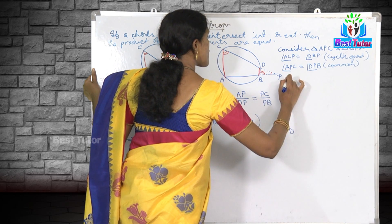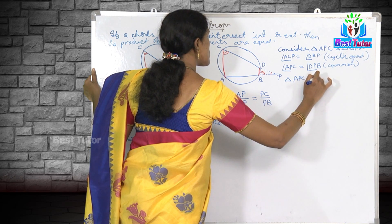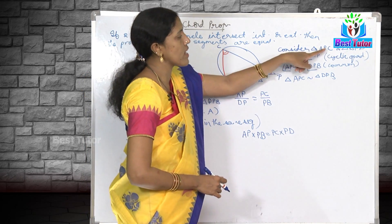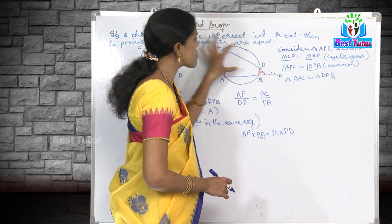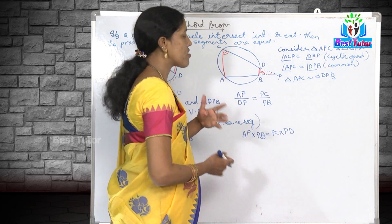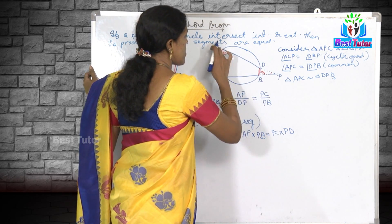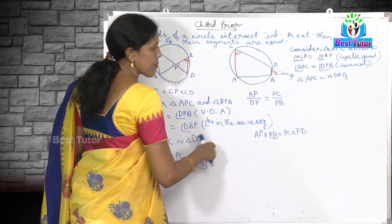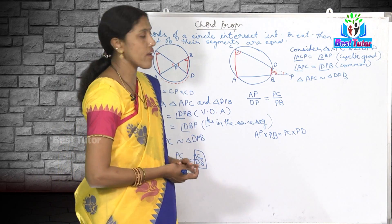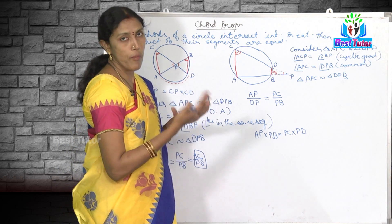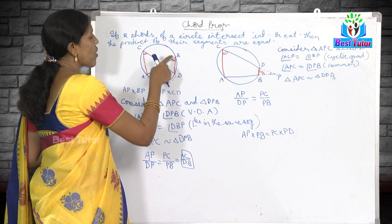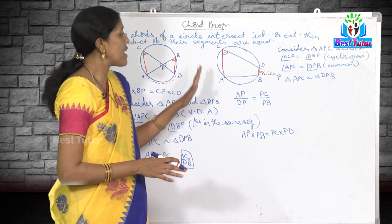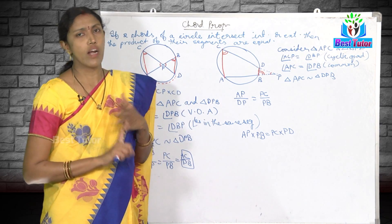Therefore triangle APC is similar to triangle DPB. Notice the notation has changed — I initially started with triangle APC and triangle BPD, but according to which angles are equal we must adjust the notation, otherwise it becomes meaningless. From this similarity the same cross-multiplication proof works out, giving AP × BP = CP × DP.